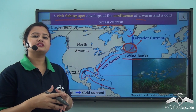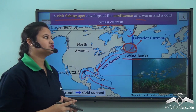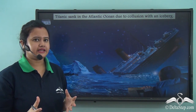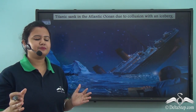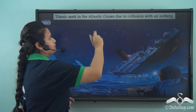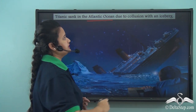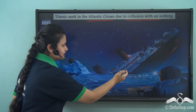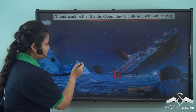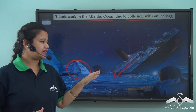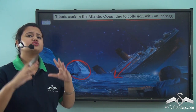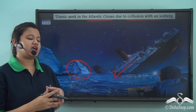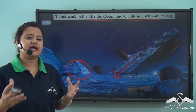Now let us see what else happens when these two currents converge. You may remember the story of Titanic — the huge luxurious ship that sank in the middle of the Atlantic Ocean due to a collision with an iceberg. During this accident, the region was overcast with dense fog, which obstructed the sight of the iceberg and caused the ship to meet with a fatal accident.